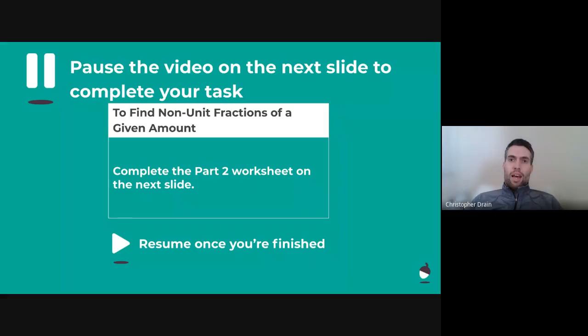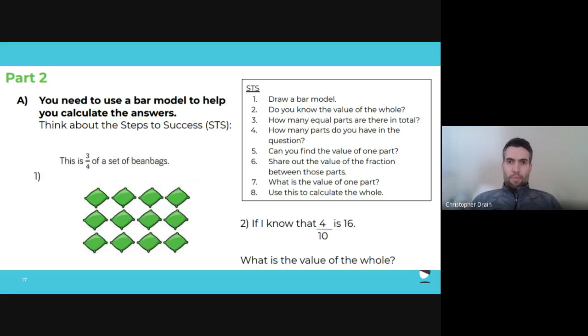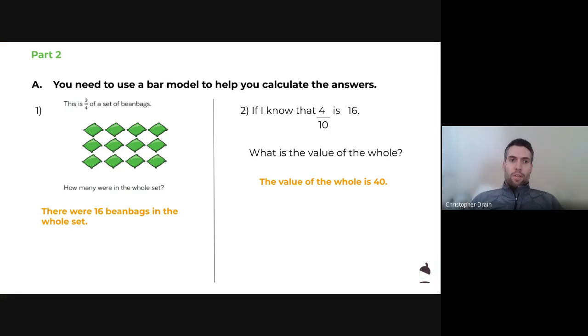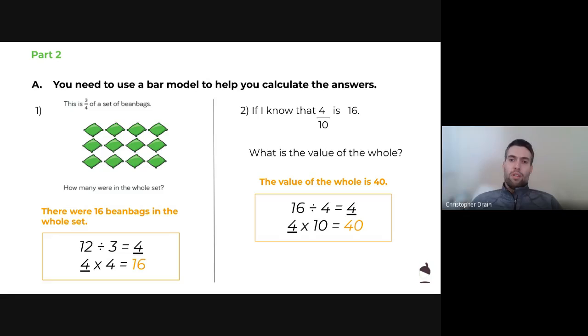Excellent. Okay. Can you now pause the video on the next slide and have a go at the questions in the part two worksheet? Great. Answers for part two, then. So there were 16 bean bags in the whole set. We want to find three quarters. Sorry, we want to find how many were in the whole set. So we could do 12 divided by three equals four. Then we could do that four times four is equal to 16. Easier to draw a bar model though. And number two, 16 divided by four equals four. Four times 10 equals 40 this time. Great.